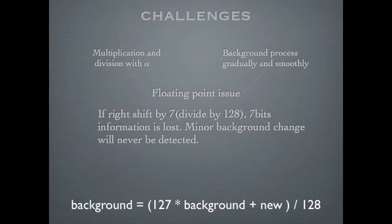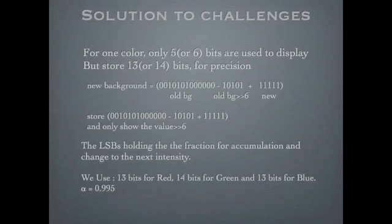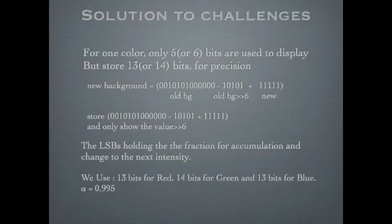One of the challenges we met is the floating point issue. We have to do multiplication and division with alpha, and the background process should be gradual and smooth. But since we are not using a DSP processor, we do it all in fixed point, and that resulted in a very big precision loss. So if we right-shift by 7, all the 7 bits will be lost. And if the background changes less than 7 bits, then it will never detect it. Our solution is that, for example, for red color which only has 5 bits, instead of storing only those 5 bits, we store all the certain bits before the division so that no precision is lost. When we transfer the value to the monitor, we only transfer the upper 5 bits — the MSB — to the monitor. So after all, it is the concept of using range to exchange for precision.